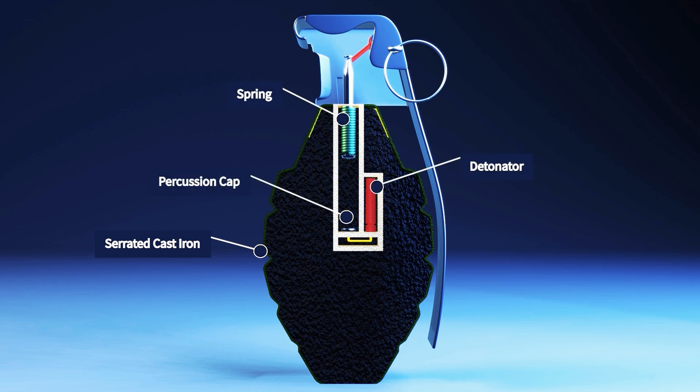The detonator contains a small amount of explosive material. The percussion cap and detonator are connected with an element called chemical delay. The grenade's inside is mostly filled with highly explosive material such as TNT or RDX.